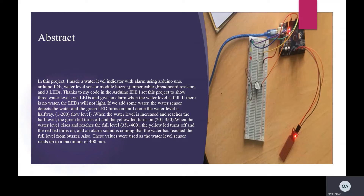If there is no water, the LEDs will not light. If we add some water, the water sensor detects it and the green LED turns on until the water level is halfway. When the water level increases and reaches the half level, the green LED turns off and the yellow LED turns on. When the water level reaches full, the yellow LED turns off and the red LED turns on, and an alarm sounds from the buzzer. These values correspond to the water level sensor reading up to a maximum of 400.